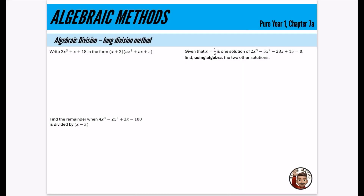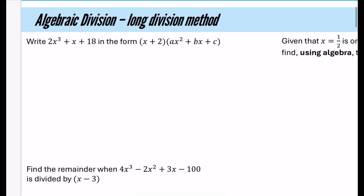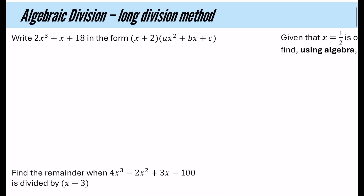We're looking at algebraic methods, which is chapter 7. I've got it as chapter 7a because I'm just going to do the first half of this chapter, which is algebraic division and also the factor theorem. I've skipped the bit on algebraic fractions because you should definitely know all of that from GCSE. We're going to do these three questions using algebraic division — this is just a revision video to refresh your memory.